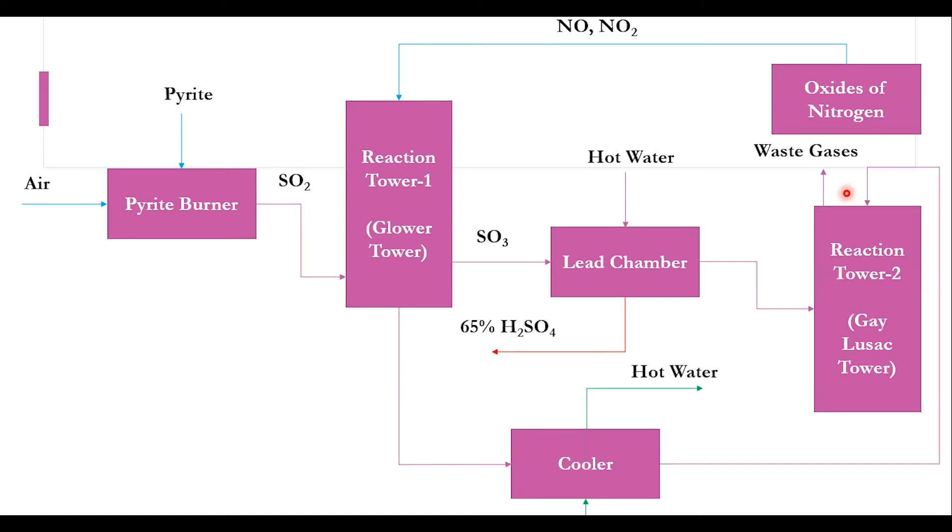These are fed to reaction tower number two, and the produced sulfuric acid at 78% purity is separated out and sent to storage. You would be thinking how 78% is produced, and if 78% is producing from here, then how 65% is producing from there. Obviously that's a question in your mind, but we will discuss it.